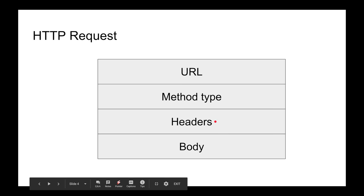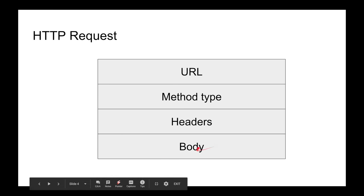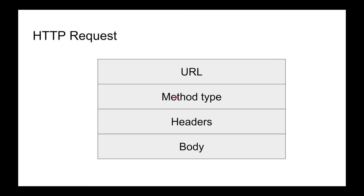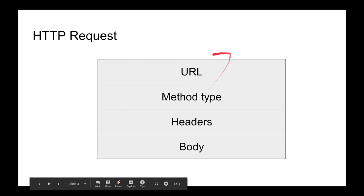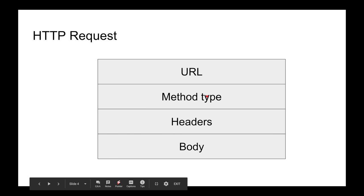Third, headers — what kind of content are you sending? Are you sending cookies? The host you're going to, encoding, cache preferences, and much more all go in the headers. If you're using a Layer 7 proxy you need to specify the host header. Fourth, the body — certain method types have a body. GET doesn't have a body; you have to send data through the URL. POST will have a body — for example, uploading an image means you send the content type and the binary data in the body.